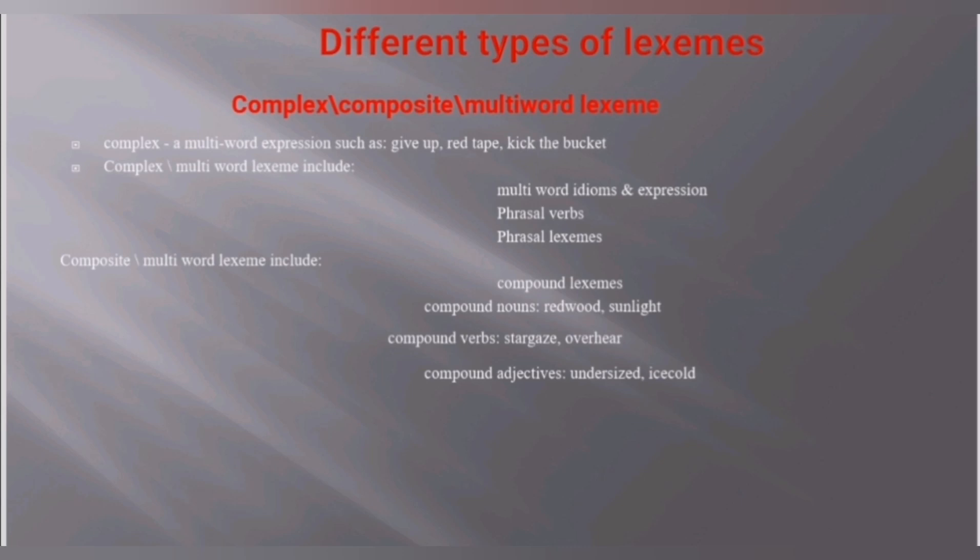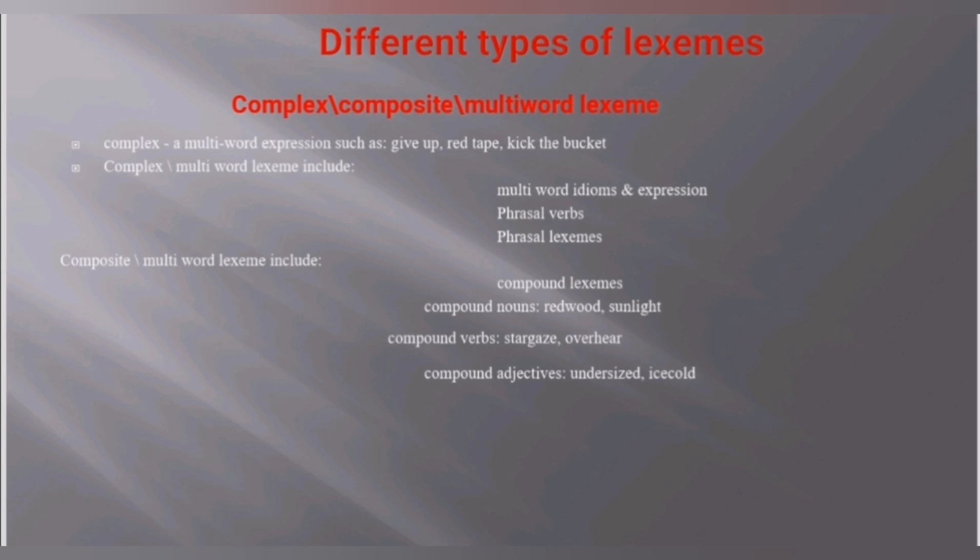Compound verbs include words like 'stargaze.' Here you have a single lexeme but it contains more words. Compound adjectives include 'undersized' and 'ice cold' — it is a single lexeme containing more than one word. Let's move towards the next slide.